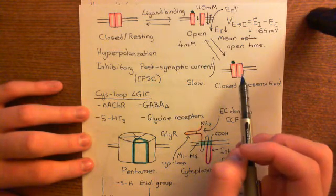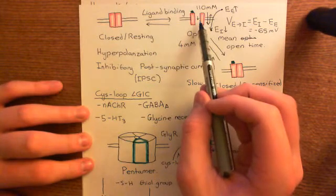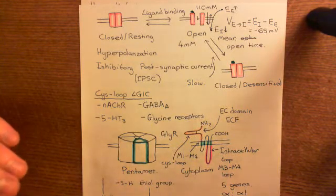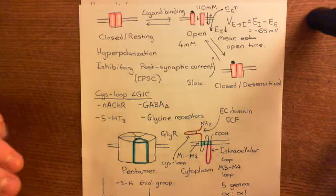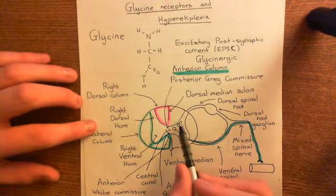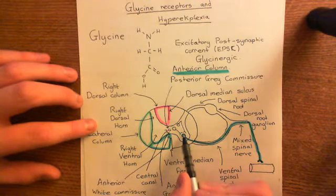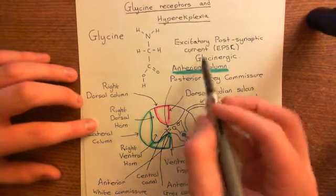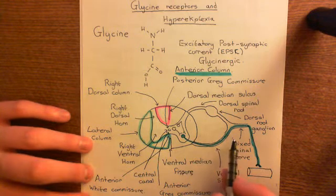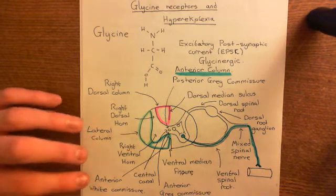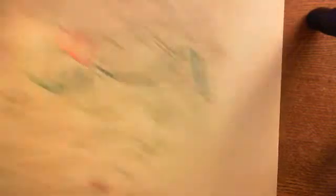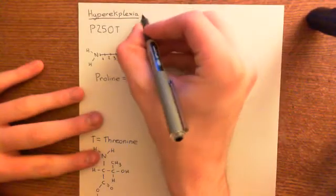So you won't get any chloride anions coming in. You won't get any inhibitory postsynaptic current. The amount of inhibitory postsynaptic current that the alpha motor neuron receives is going to go down. And we know what that causes — if the inhibitory postsynaptic current goes down, then these excitatory neurons will no longer be neutralized. Their EPSCs won't be neutralized by the inhibitory postsynaptic current, and it will cause the alpha motor neuron to fire too much. You'll get too much contraction of the skeletal muscle cells — this is why hyperekplexia is also known as stiff baby syndrome.